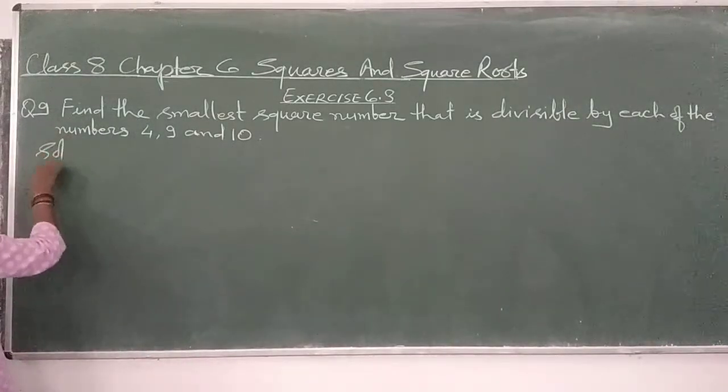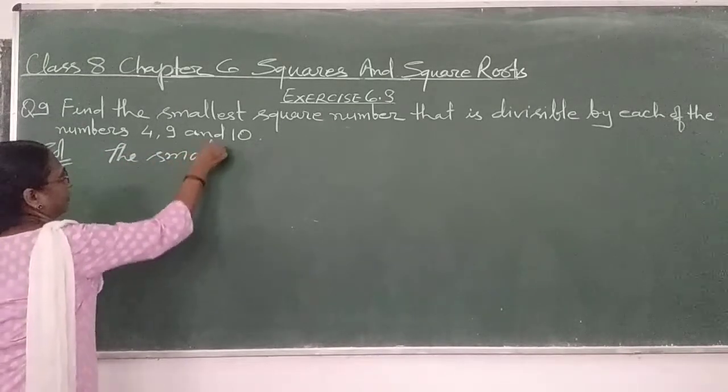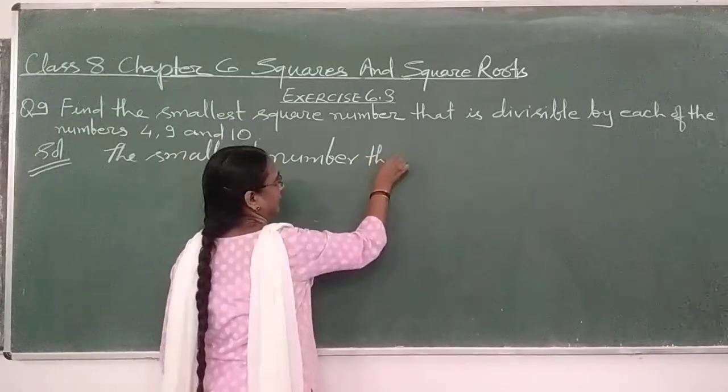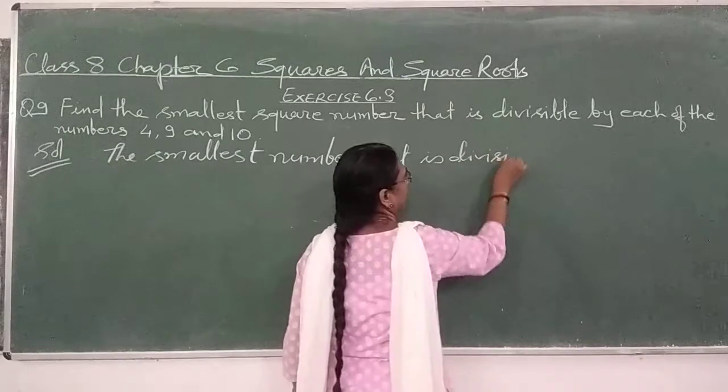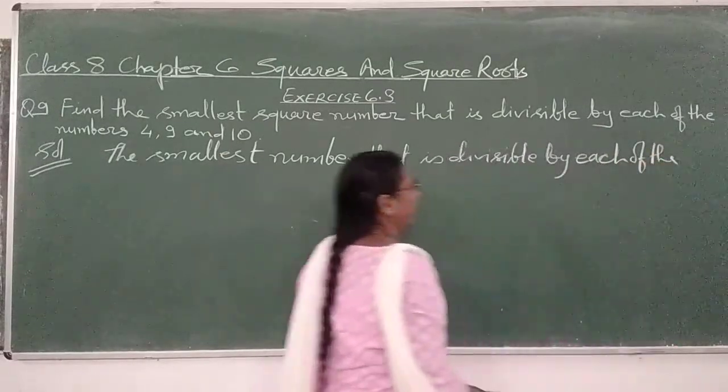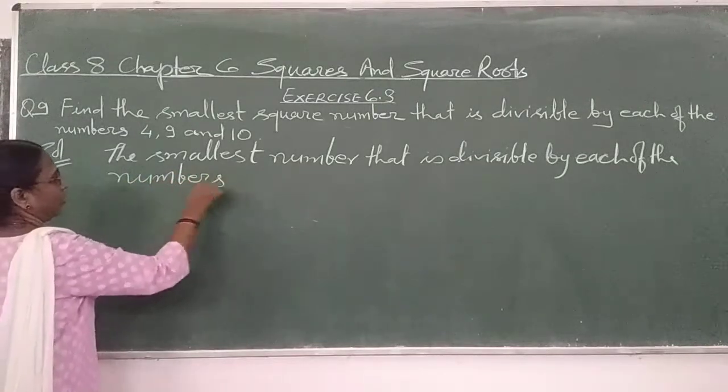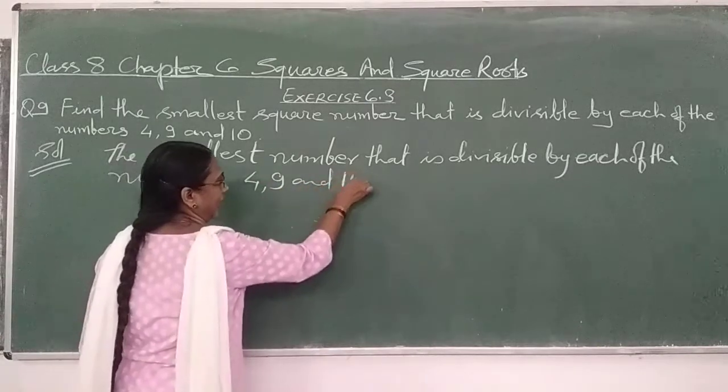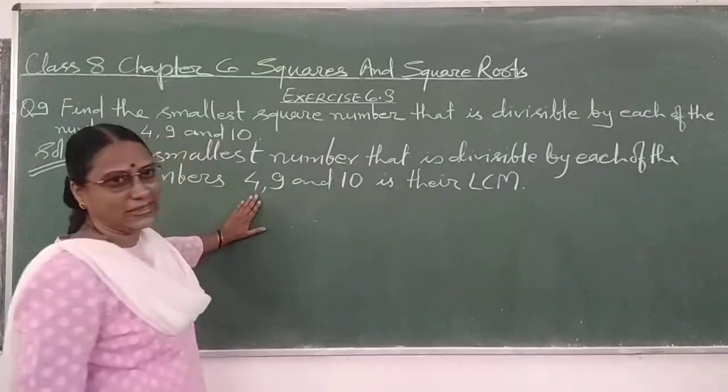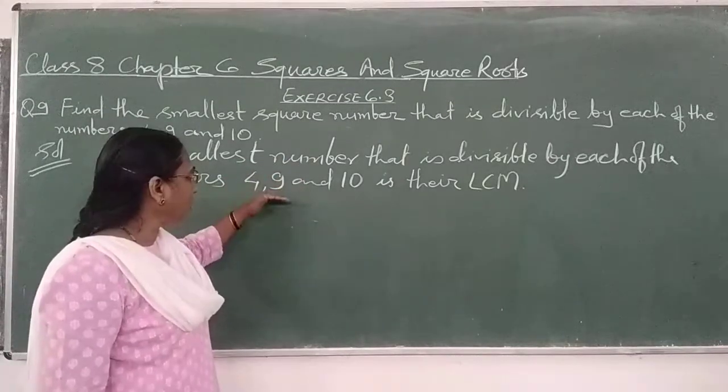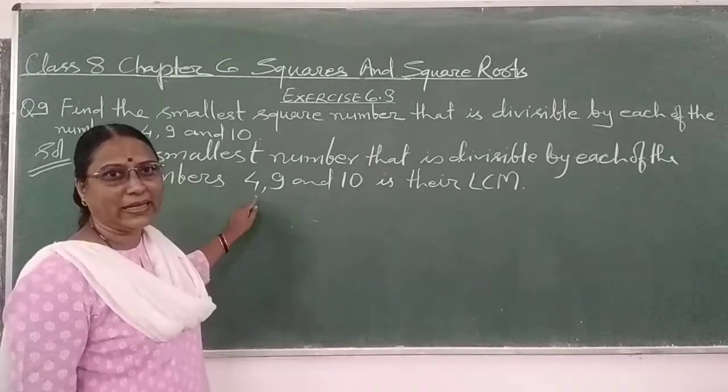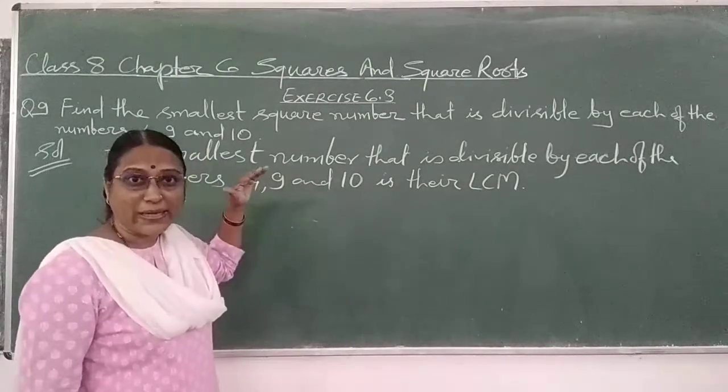Now solve the smallest number that is divisible by each of the numbers 4, 9 and 10 is their LCM. इसके प्रा करेंगे. पहले हम क्या दिकालना है? इस नंबर से divisible, smallest नंबर दिकालना है.